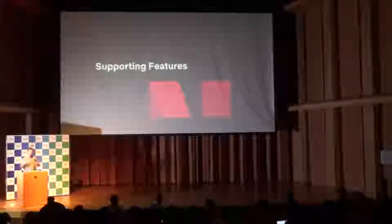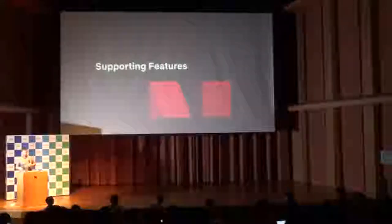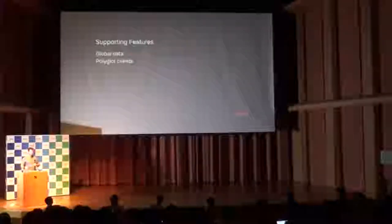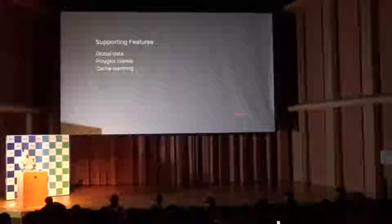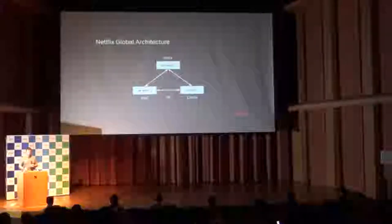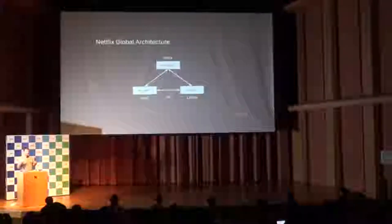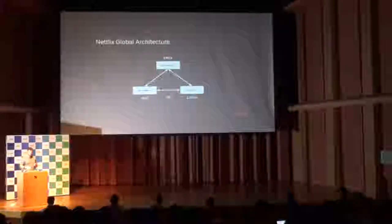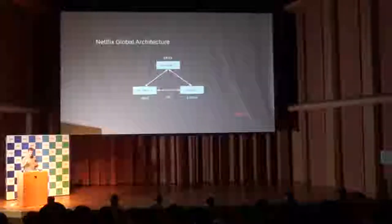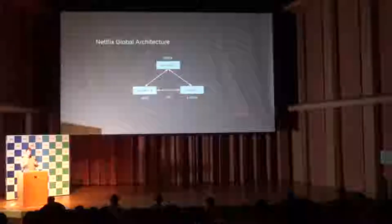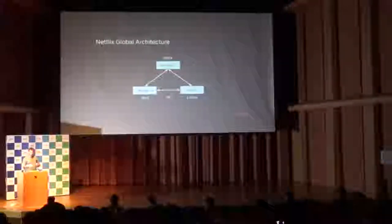Some supporting features that help EVcache work in a global environment: global data replication between AWS regions, polyglot clients — Netflix now uses not just Java but also Python, Ruby, JavaScript, and other languages — and cache warming, generally used for deployments. Netflix runs out of three AWS regions: EU-West1, US-East1, and US-West2. Europe, Middle East, and Africa go to Europe; Latin America goes to US-East1; Asia-Pacific such as Japan goes to US-West2 in Oregon; and North America is split between the two.